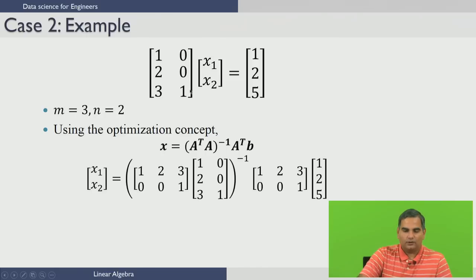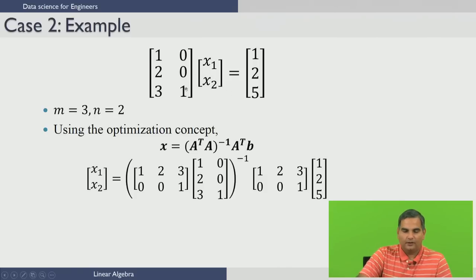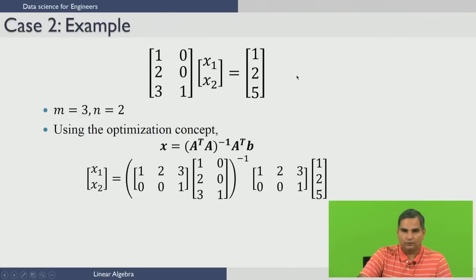The second equation reads as 2x1 equal to 2, and the third equation reads as 3x1 plus x2 equals 5. From the first equation, you get x1 equal to 1. Since 2 times 1 equals 2, the second equation is also satisfied. The third equation, 3x1 plus x2 equal to 5 with x1 equal to 1, gives x2 equal to 2. So even though the number of equations are more than the variables, the equations are such that we can get a solution x1=1 and x2=2 that satisfies all three equations.